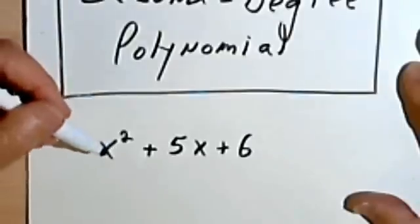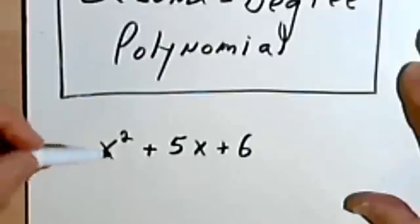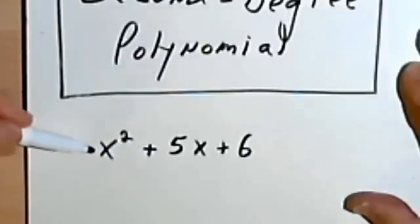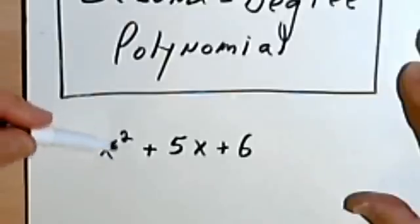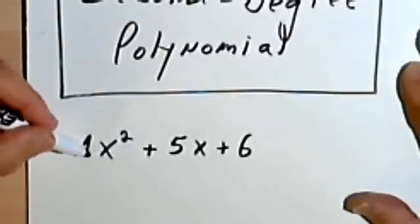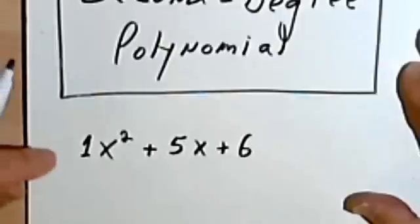Now in this video specifically we're talking about second-degree polynomials where the coefficient of the first term is just a 1. In other words, we could write a 1 in here, but normally it's just understood.